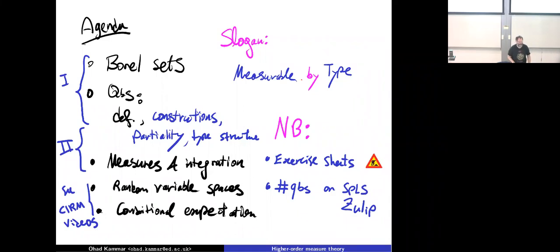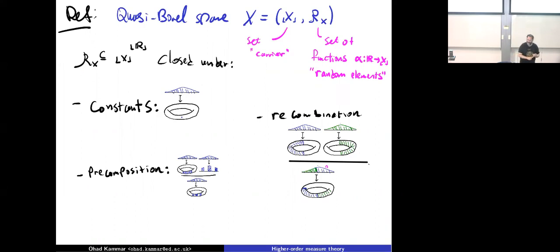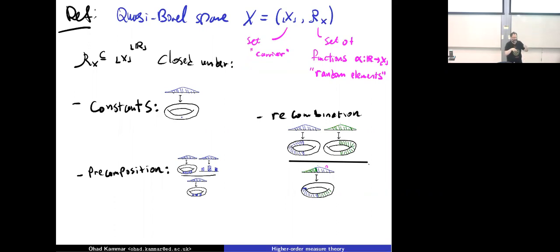A quasi-Borel space has two things: a set of points and a collection of random elements — measurable ways to push a probability onto the space. It's closed under three axioms: constant elements (deterministic elements putting all probability on one point are measurable), pre-composition (if you have a random element and a measurable rearrangement, the pre-composition is a random element), and recombination (a countable case split over disjoint Borel sets with a random element for each, combined, is also a random element).